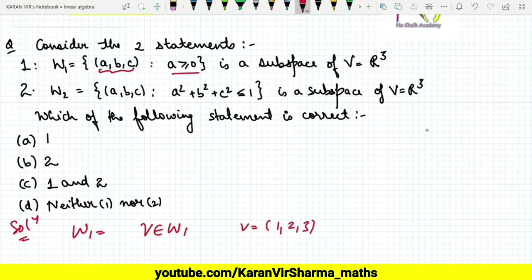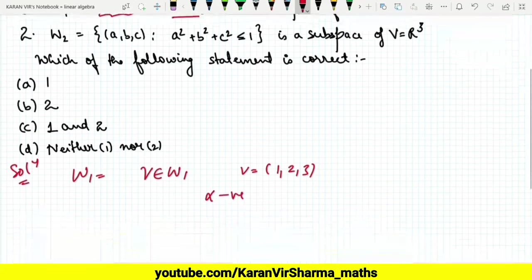Let it be (1,2,3). So clearly this belongs to W1. Now I want to check whether this is a subspace or not. You know it must be closed under scalar multiplication. Now there's no restriction on the field, so if you take α as negative, let it be -2.